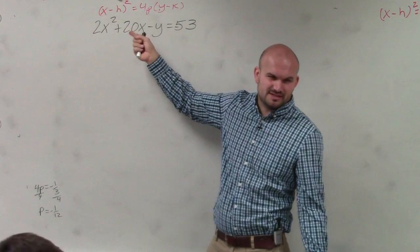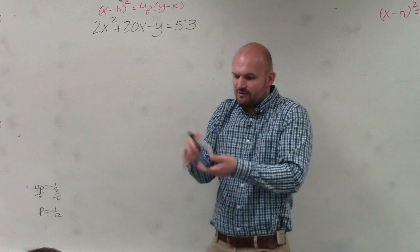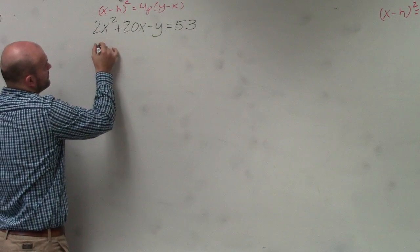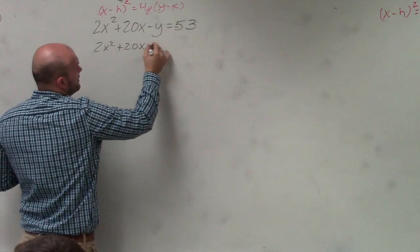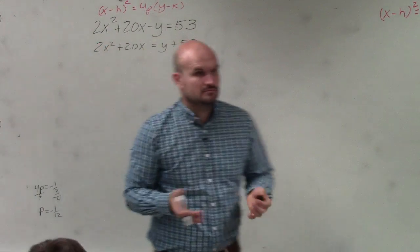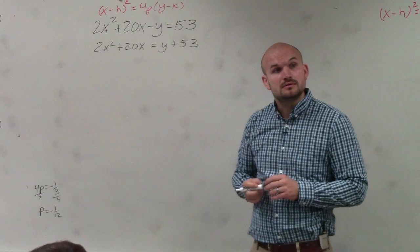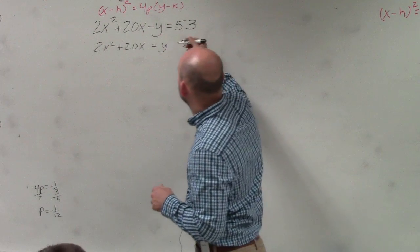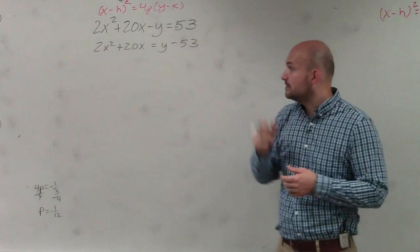And remember, that 4p is basically a number. So let's get whatever variable is squared, we'll put them on one side, and whatever the other one's on, we'll put on the other side. So therefore, I have 2x squared plus 20x equals y plus 53. Oh yeah, it still is a negative. Thank you. That was negative over there. I forgot. It was a negative 53 in the problem.